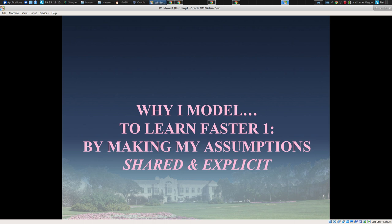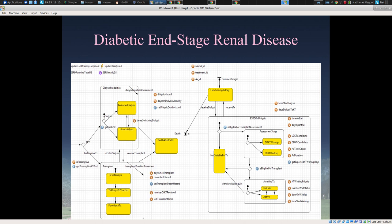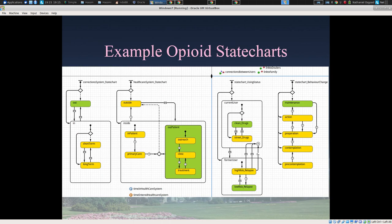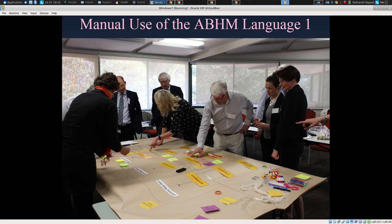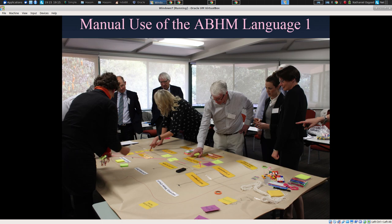Why do I model? One big reason is to learn — to learn quicker, to learn more reliably, to learn more deeply. Models help me make my assumptions shared and explicit, whether they're qualitative models or semi-quantitative such as causal loop diagrams from system dynamics, or whether they're more precise in the form of state charts and agent logic which have very precise states a person can be in, actions that can change those states, and rules under which they apply — or these models from opioids. By putting that understanding out there in an explicit and shared way, we can invite critique by others.